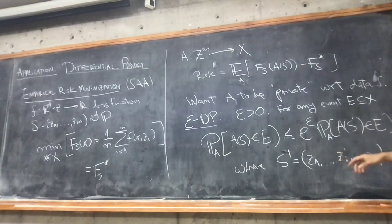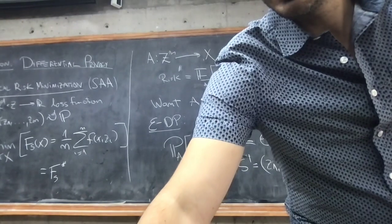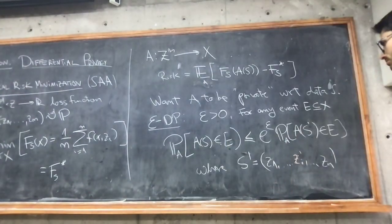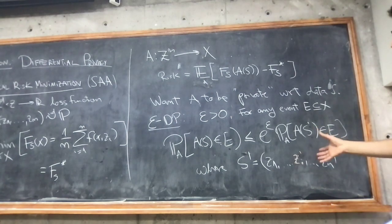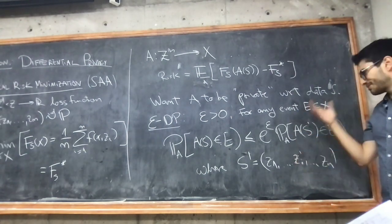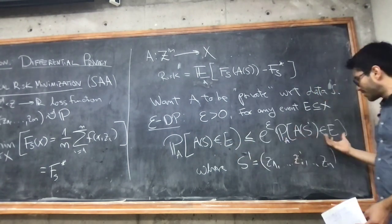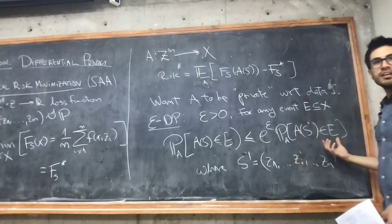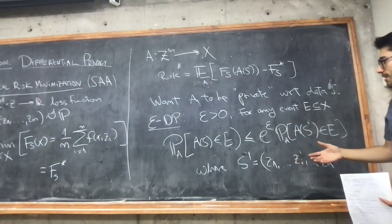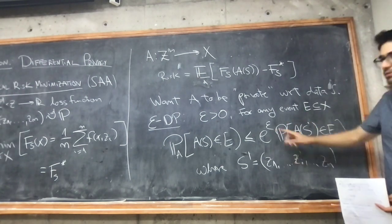This definition of differential privacy encapsulates the fact that the algorithm is somehow stable to replacements of one of the users from the data set on which the algorithm was trained. It's a probabilistic notion, so the algorithm has to be necessarily randomized for this to even make sense.